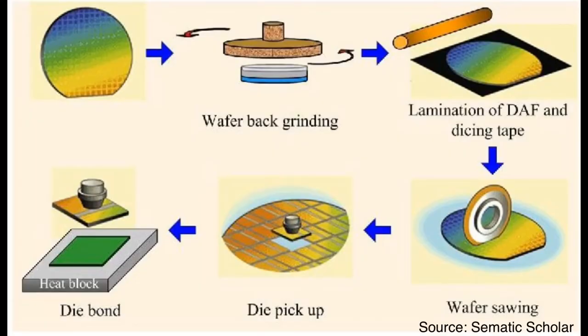To use DAF, first step is to laminate DAF on backside of wafer. Second step is wafer sawing process, and during this process, sawing blade cut wafer and DAF as well. Third step is to put sawn die with DAF back on substrate. As you can see, there is no adhesive dispensing process, because film is adhesive for DAF. Then, oven cure process is followed, like paste type adhesive.